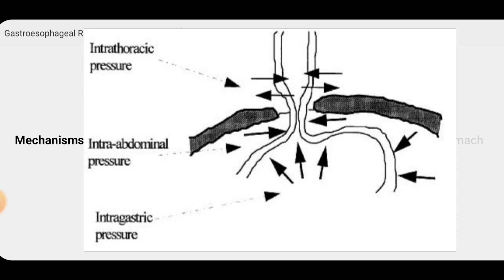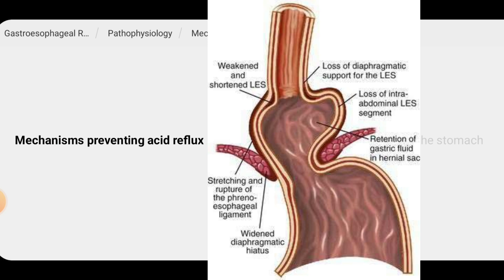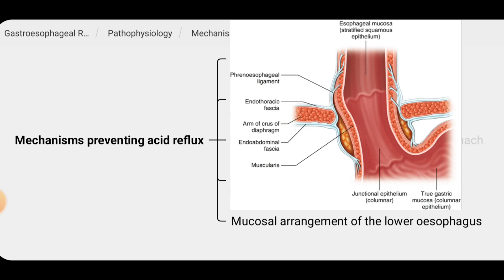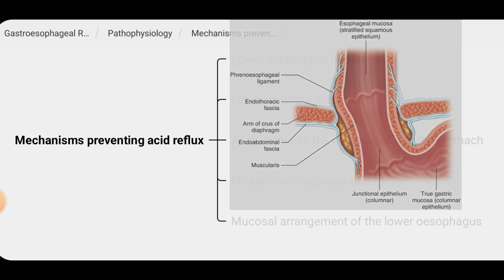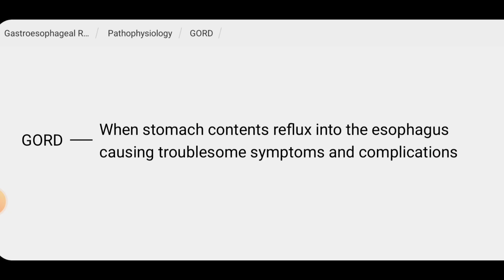The intra-abdominal pressure also compresses the lower part of the esophagus, keeping it closed. That is why in cases of hiatus hernia, patients develop gastroesophageal reflux disease, because this compression is lost. The lower esophagus has a specialized mucosal arrangement called the squamous columnar junction, which is the boundary between the esophageal mucosa and the gastric mucosa, and is an important barrier that helps to prevent acid reflux. Therefore, GORD develops when these preventive mechanisms are disturbed.